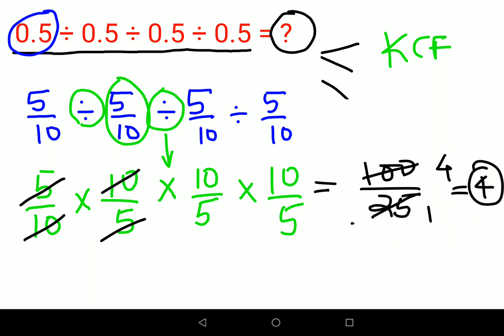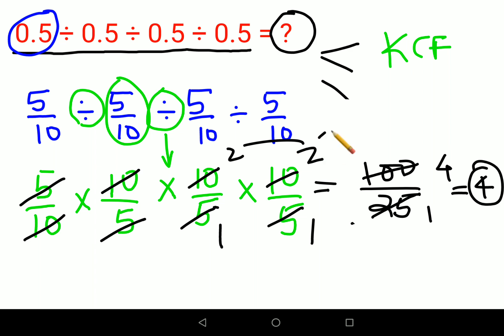Or you can do simplification by cross-reducing the fractions. 5 goes into 5 once, and 5 goes into 10 twice — and again: 5 goes into 5 once, 5 goes into 10 twice. So 2 into 2 gives you 4. You get the same answer: 4.